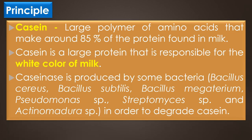Casein is a large polymer of amino acids that makes up around 85% of protein found in milk. It is responsible for the white color of milk. Caseinase is an exoenzyme produced by some bacteria like Bacillus cereus, Bacillus subtilis, Bacillus macerans, Pseudomonas species, Streptomyces species, and Actinomadura species.